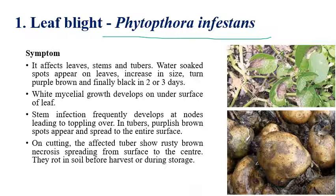Looking at the symptoms: initially, water-soaked lesions appear on the leaves. These water-soaked lesions increase in size slowly and later turn purple-brown in color within two to three days. The most favorable temperature conditions are low temperature — around 12 to 15 degrees centigrade. In Ireland, the temperature in those times fell below 10 to 15 degrees centigrade, which were the most favorable conditions for late blight of potato.